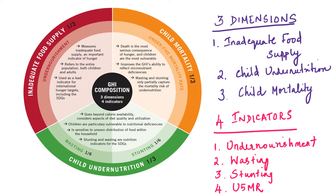The global hunger index has three dimensions: inadequate food supply, child undernutrition, and child mortality. These three dimensions have four indicators. The first indicator is undernourishment, which refers to the percentage of the population who are undernourished — people with insufficient calorie intake, including both children and adults. This is the indicator for the first dimension, inadequate food supply.